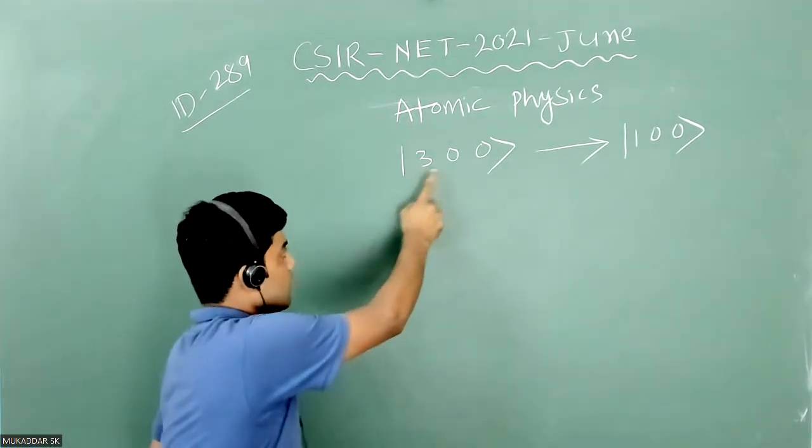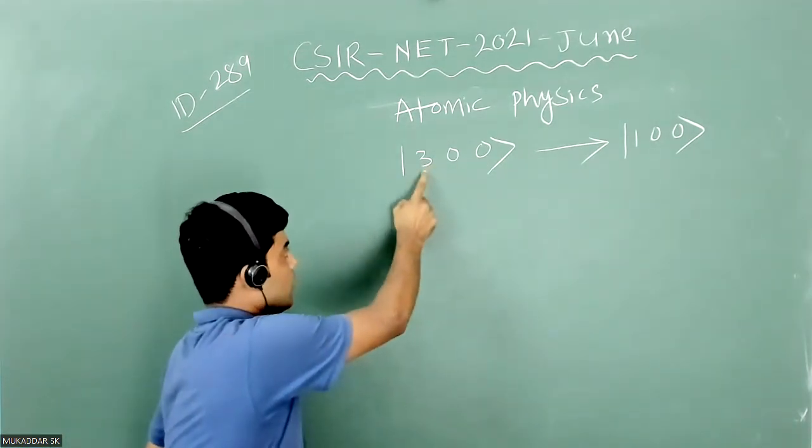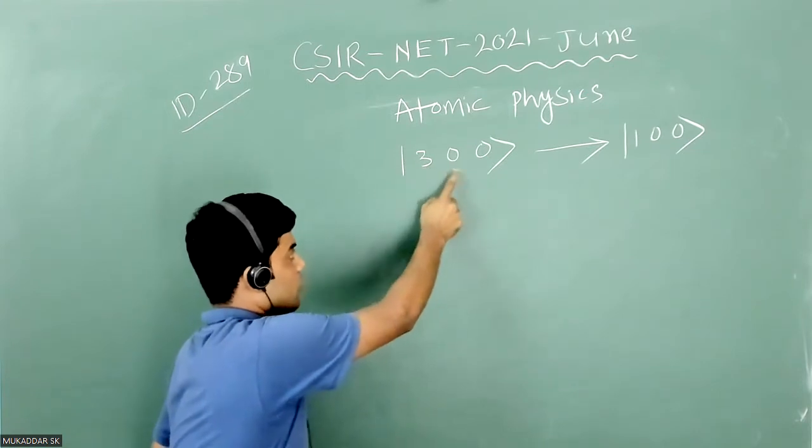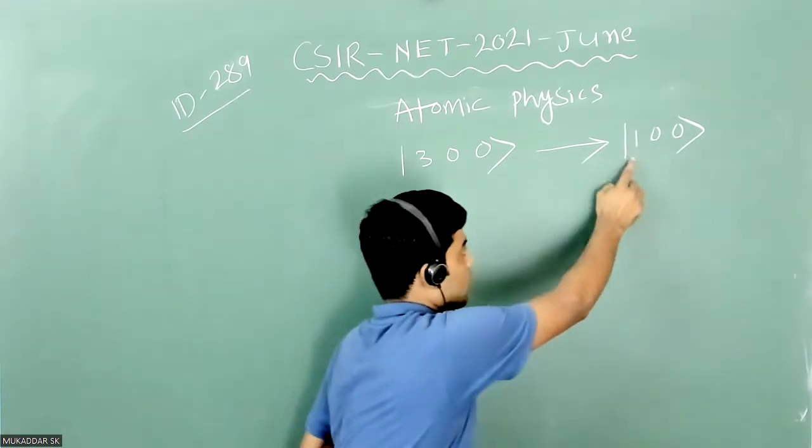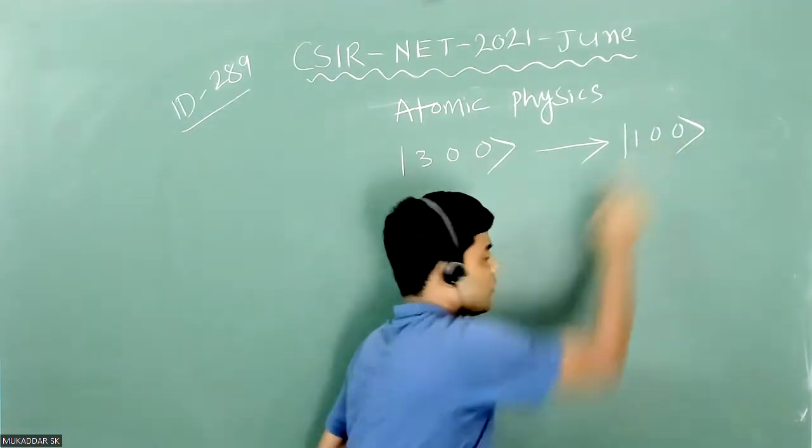Here 3,0,0 means n value is 3, L value is 0, M value is 0. Similarly here n is 1, L is 0, M is 0.